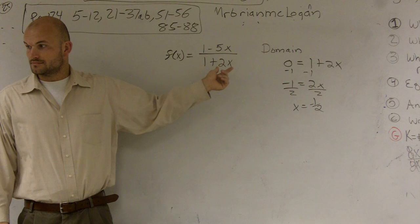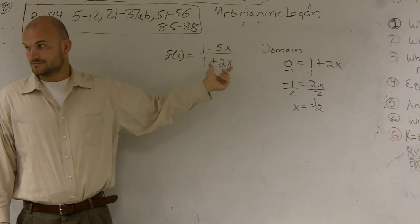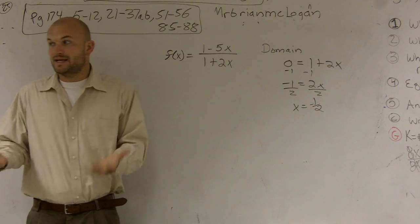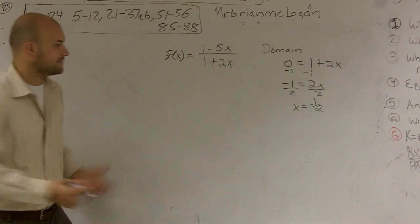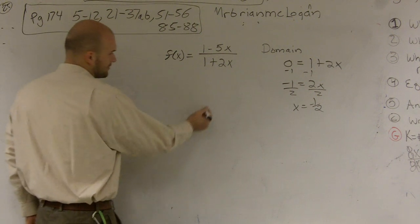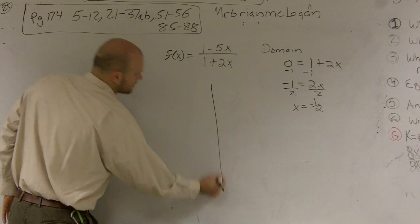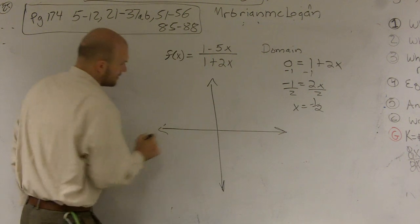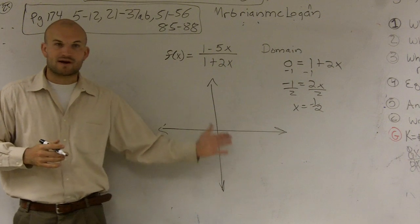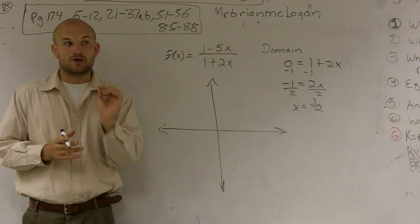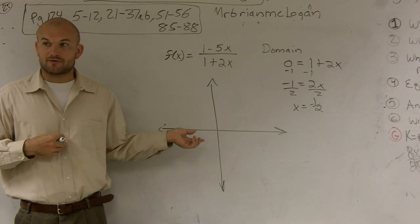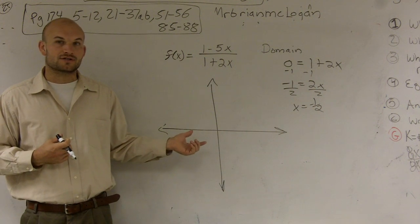So therefore, when I plug in the number negative 1 half into x, I get zero on the bottom. So when I plug in negative 1 half into the bottom, I get zero. Meaning we cannot do that. So if I was going to look at my graph, and like I said, I have no idea what my graph is going to look like. However, I do know that at negative 1 half, my graph is not, you can't have negative 1 half. That cannot be a part of my function.